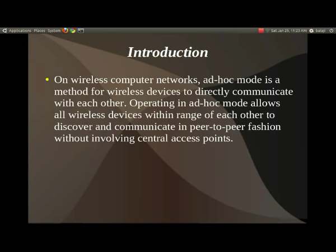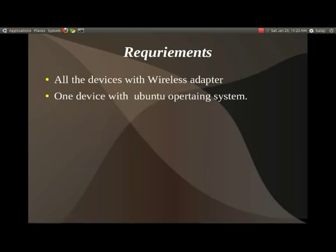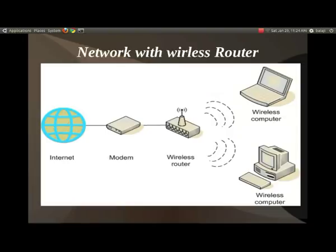In an ad hoc wireless network, every network device that has a wireless adapter can communicate with each other. The base requirement is that all wireless devices in your home — such as an iPad, iPod, Android phone, or HTC phone — need to have a wireless adapter. You also need one computer running the Ubuntu operating system.